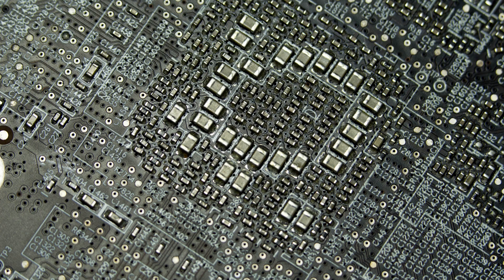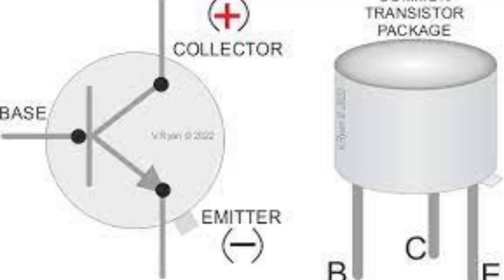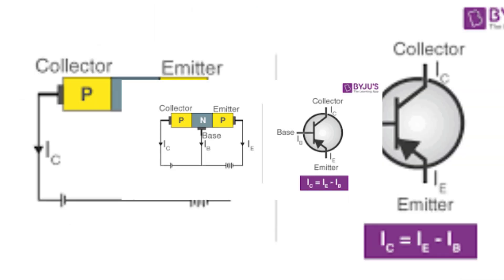Transition Frequency is the frequency at which the transistor's gain starts to decrease and it transitions from an amplifier to a switch; the typical transition frequency for the 2N2222 is around 250 megahertz. Base-Emitter Voltage (VBE) is the voltage that must be applied between the base and emitter terminals to turn on the transistor; the typical VBE for the 2N2222 is around 0.7 volts. The 2N2222's characteristics make it well suited for low-power amplifiers, switching circuits, and voltage regulators, with its high gain, low noise, and low power dissipation making it a versatile and reliable choice.